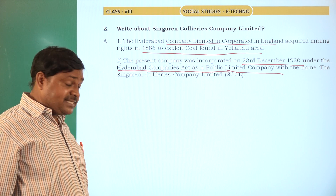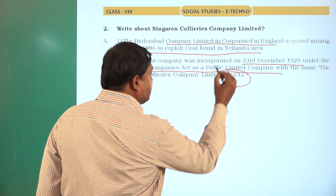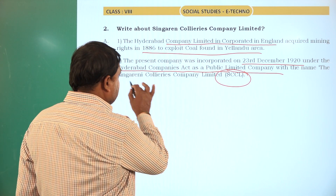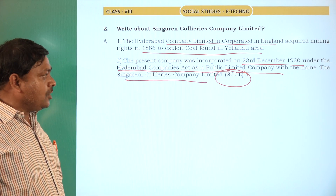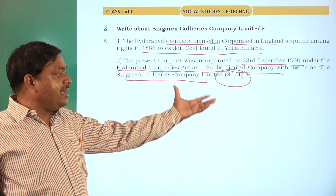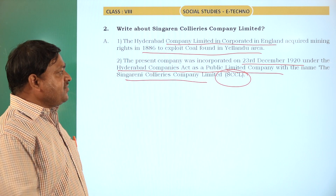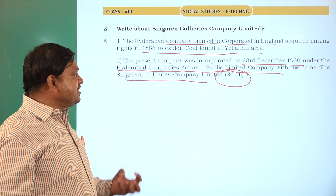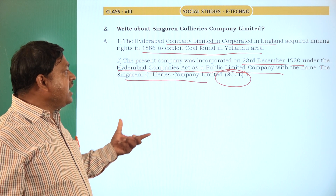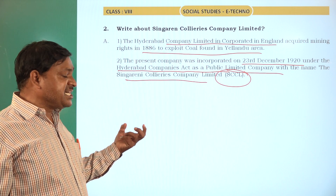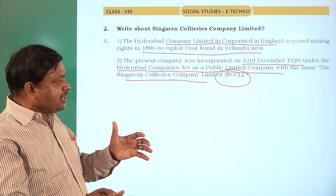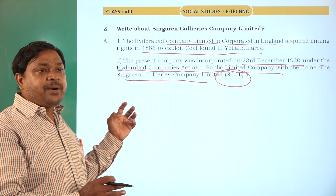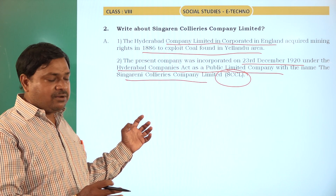When Andhra Pradesh was formed in 1956, the company was renamed as SCCL — Singareni Collieries Company Limited. At present it is running as a joint venture under the central and state government, and it is the largest public organization in our country.